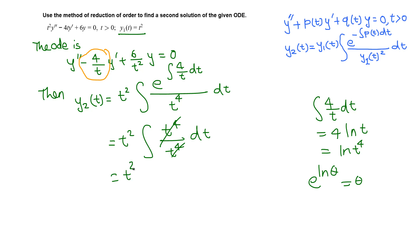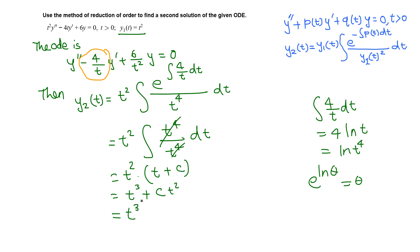So we have t² times the integral of 1, which is t plus a constant of integration. Distributing gives t³ + c·t². We are asked for a second solution, so taking c = 0 removes the t² term. Since t² is already the first solution, the second linearly independent solution is y2 = t³.